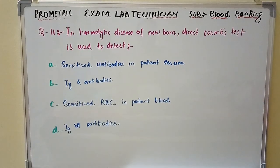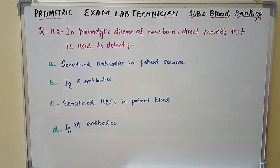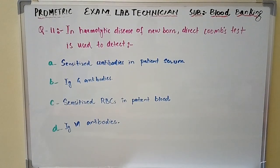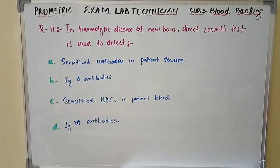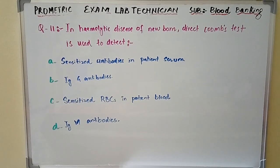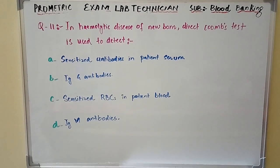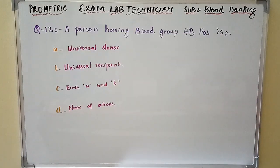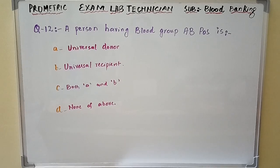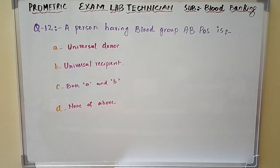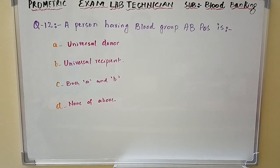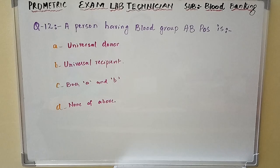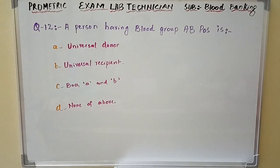Option A: sensitized antibodies in patient serum. Option B: IgG antibodies. Option C: sensitized RBCs in patient blood. Option D: IgM antibodies. Question number twelve: A person having blood group AB positive is — Option A: universal donor. Option B: universal recipient. Option C: both A and B.